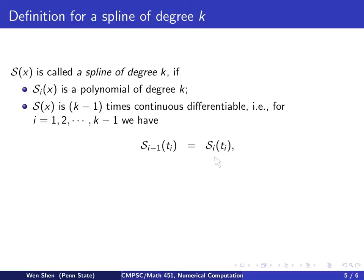The function must be continuous, so at tᵢ, approaching from the left and right, S has the same value. Furthermore, the first derivative approaching tᵢ from the left and right must also be equal. One can continue until the (k-1)th derivative, where the value approaching tᵢ from the left equals the value from the right.